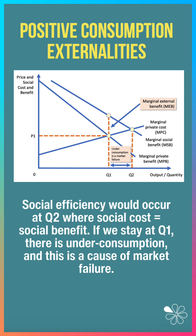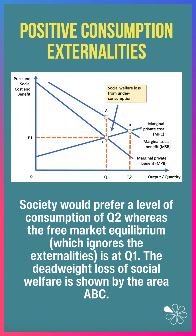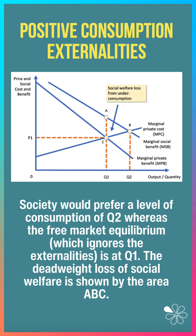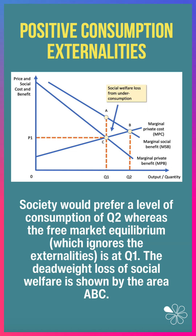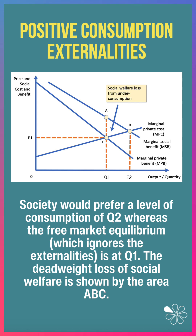If we stay at Q1, there is under-consumption. This is a cause of market failure. Society would prefer a level of output of Q2, whereas the free market equilibrium, which ignores the externalities, is Q1. Therefore, the deadweight loss of social welfare is shown by the area A, B, C.